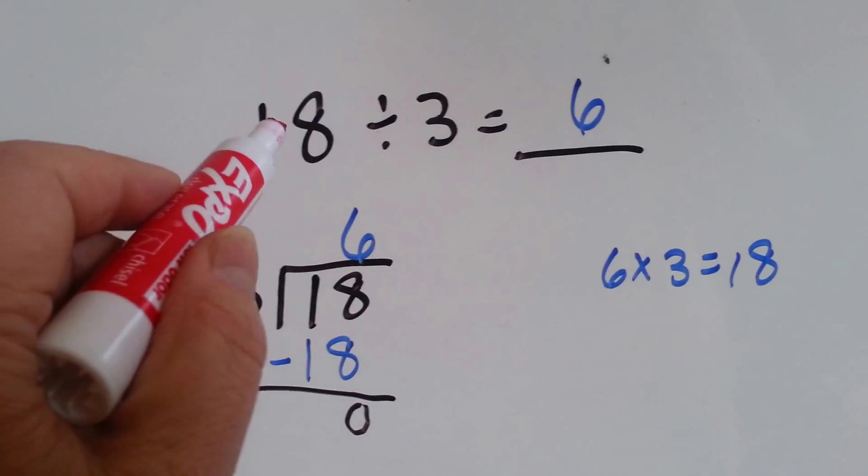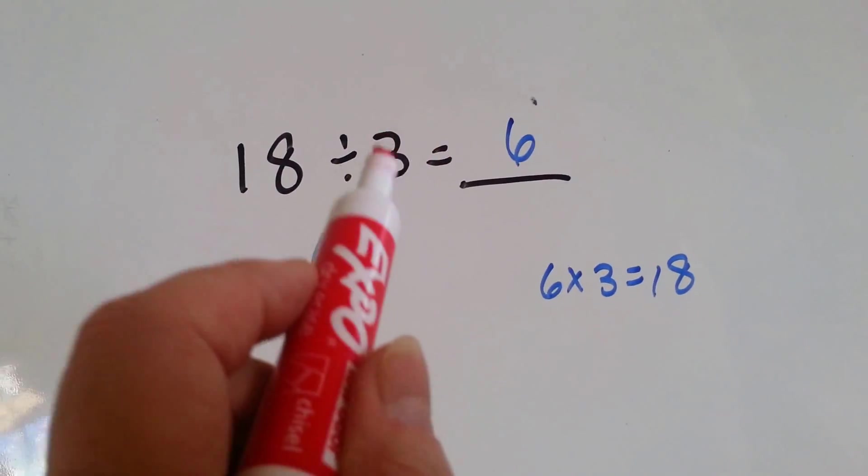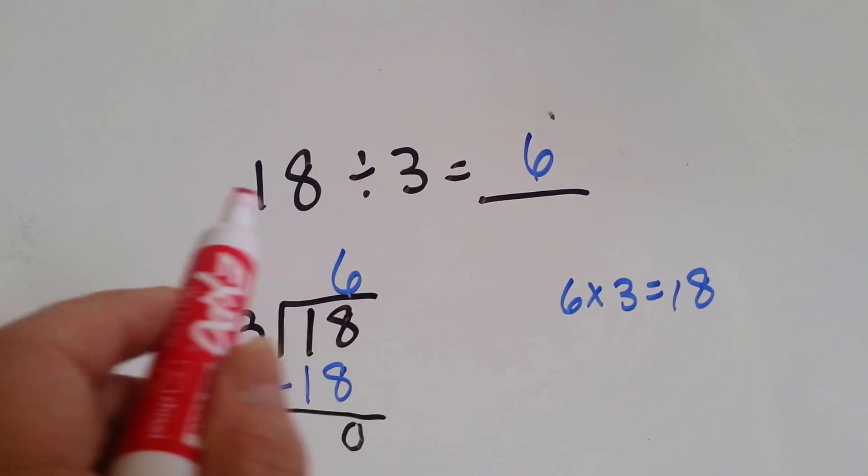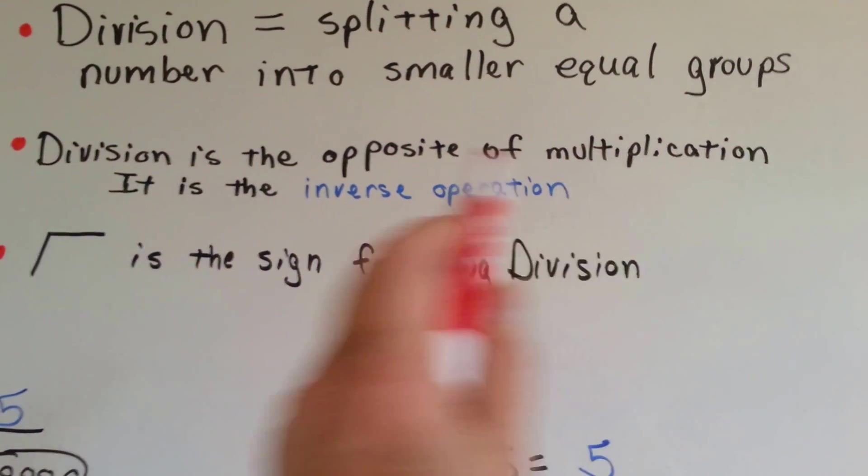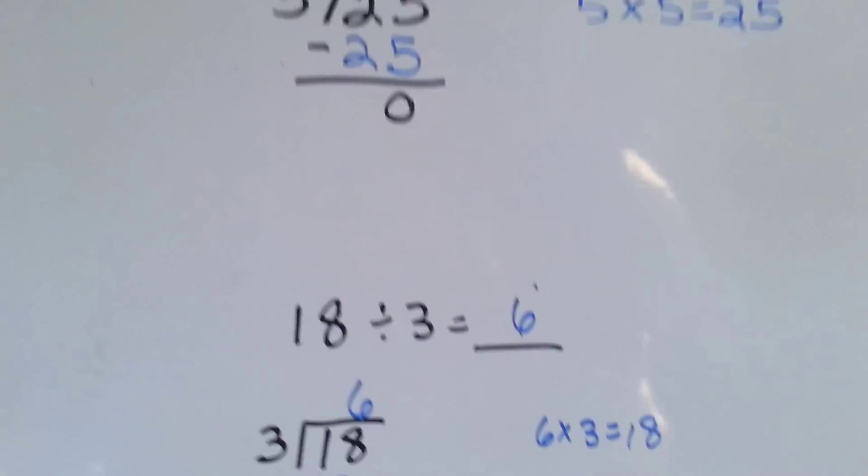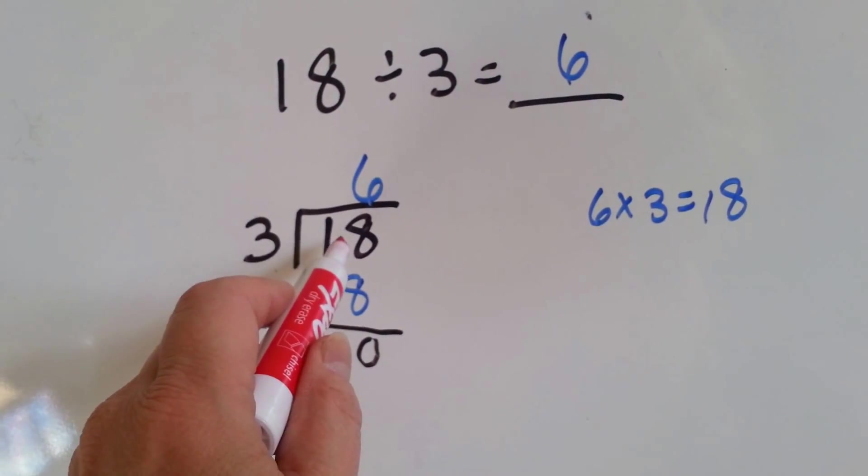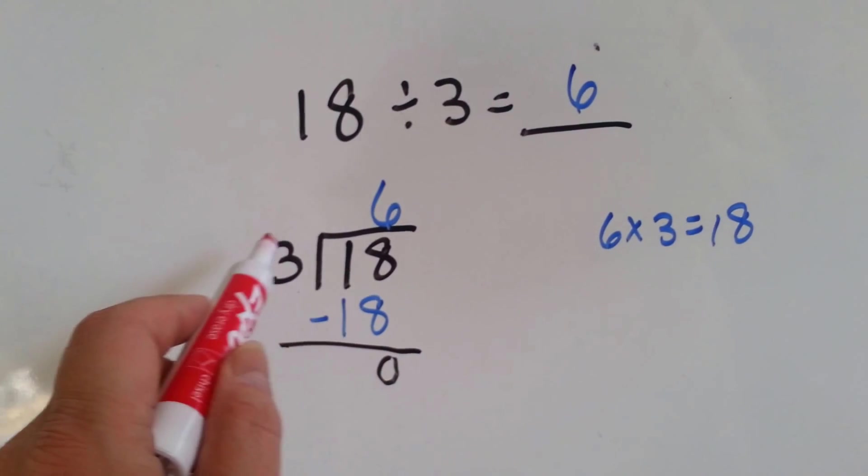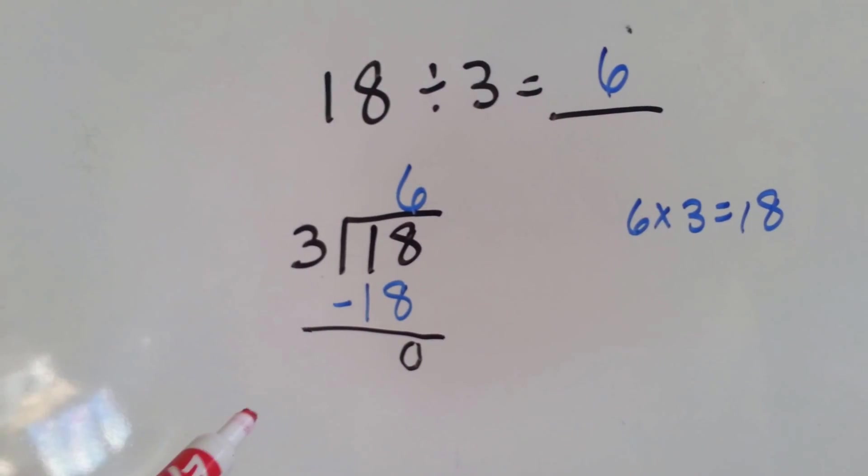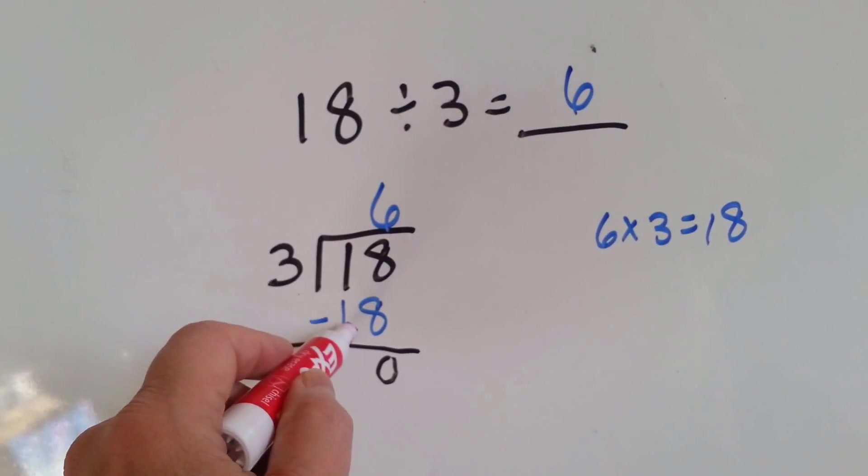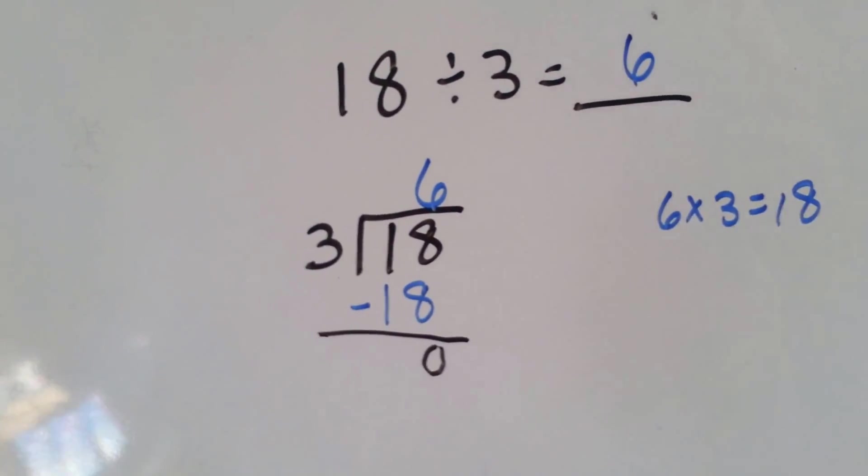Let's try this one. 18 divided by 3 equals 6. It's the same thing as 6 times 3 equals 18. It's going the other way because division is the opposite of multiplication. It is the inverse operation. So it's going the other way. So dividend goes on the inside, the divisor is the thing we're dividing it by, goes on the outside, and the quotient goes on top. 3 times 6 is 18, and it comes down here. 18 take away 18 is 0.